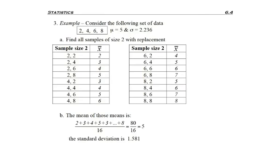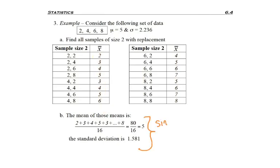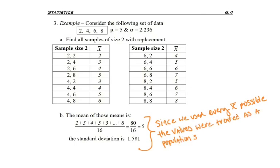Now I want to find the average of all of these averages — those are all sample averages, and I want to find the mean of those means. I'm going to take all of these numbers, divide by 16 because there were 16 samples, and I get an average of my averages. Then I want to find the standard deviation of all those x-bars. Since we used every x-bar possible, the values are treated as a population set.